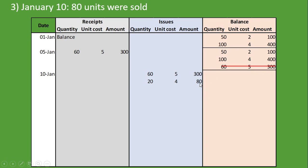We have now accounted for all 80 units sold. Under balances, we still have the 50 units at 2RN per unit, and from the 100 units we took out 20, so we are left with 80 units at 4RN per unit. We record our totals and we have finished recording the third transaction.